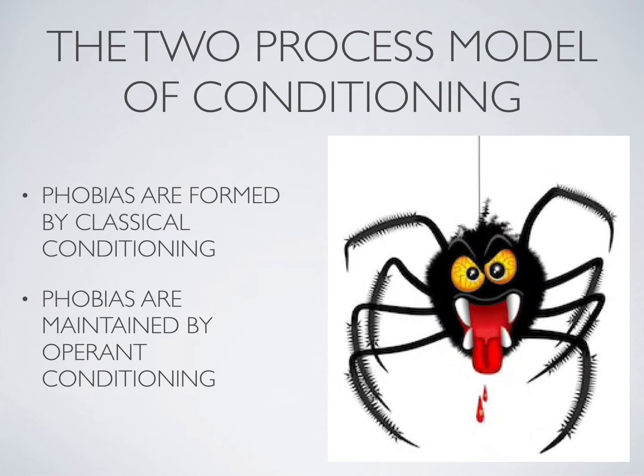In 1947, Mowrer theorised a two-factor model that hypothesises that phobias are learned through classical conditioning and are maintained through operant conditioning. Classical conditioning explains how phobias can be developed, although it does not explain why phobias remain over time. Mowrer theorised that phobias can be reinforced through operant conditioning because the behaviour is negatively reinforced.